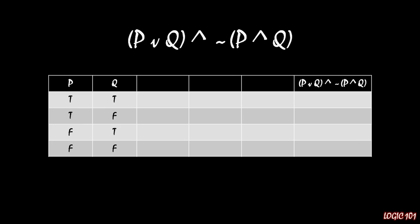I've done a little bit of the work already here. We have two simple sentences, P and Q, with all combinations of truth values filled in. In the last column we have the overall expression P OR Q AND NOT P AND Q. If that is in fact the exclusive OR, it should give FALSE in the top row and the bottom row, and TRUE in the middle two rows — FALSE at top because both are TRUE, FALSE at bottom because both are FALSE, and TRUE in the middle two rows because one is TRUE and the other is FALSE.